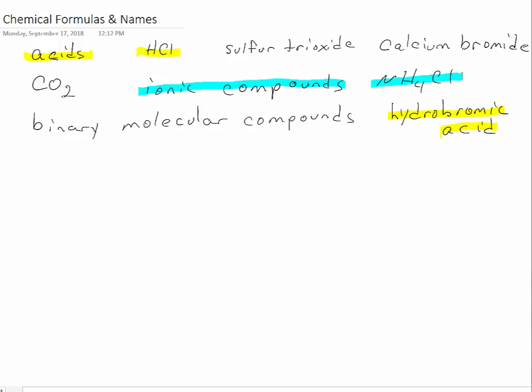The other way you can tell ionic compounds, especially ones that don't have ammonium in them, is they tend to have a metal and a nonmetal in combination. So calcium bromide is another ionic compound.